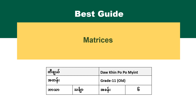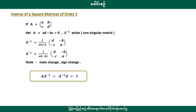Let's take a look at the inverse of a square matrix of order 2. A square matrix is a singular matrix when its determinant equals zero.